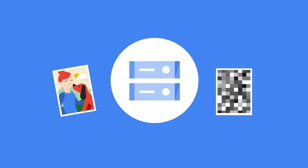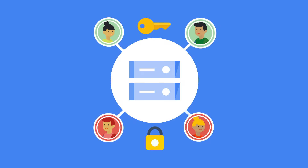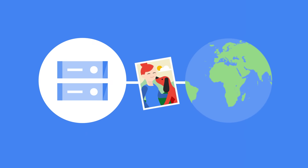By default, data at rest is encrypted and you have options to secure it with your own encryption keys. You can grant permission to specific members and teams, or make the objects fully public for mobile and web applications.